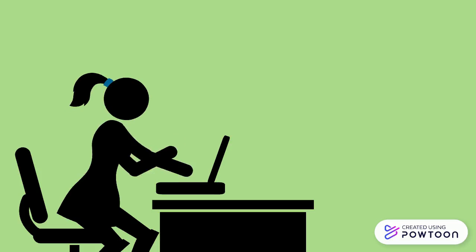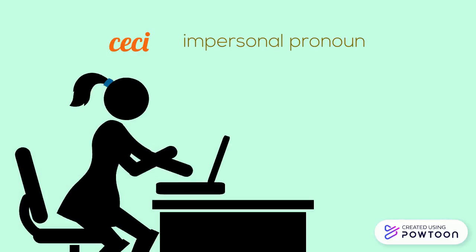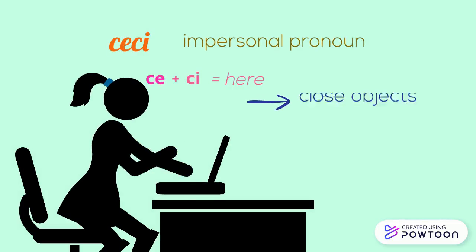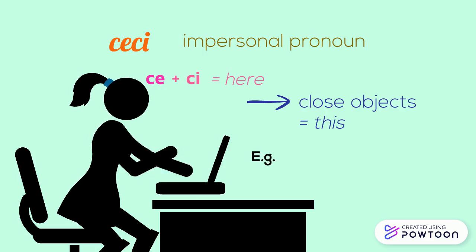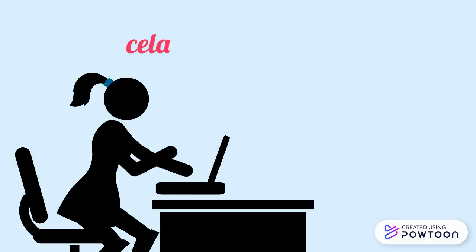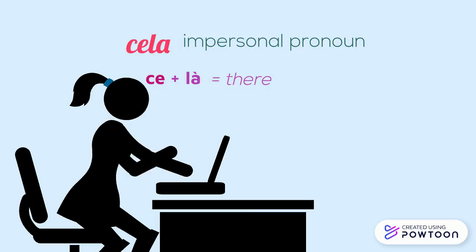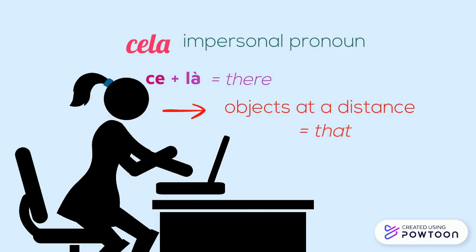Then we have 'ceci' and 'cela.' 'Ceci' is an impersonal pronoun made of 'ce' and '-ci.' It refers to a close object and means 'this' — for example, 'regarde ceci' (look at this). 'Cela,' on the other hand, is an impersonal pronoun made of 'ce' and '-là.' It refers to an object at a distance and means 'that' or 'it' — for instance, 'regarde cela' (look at that).